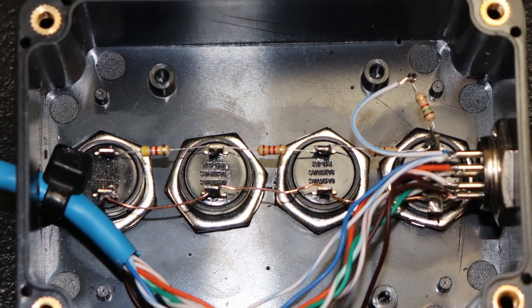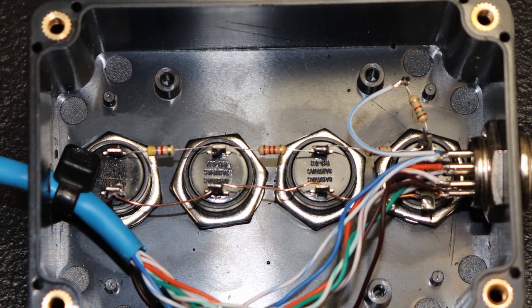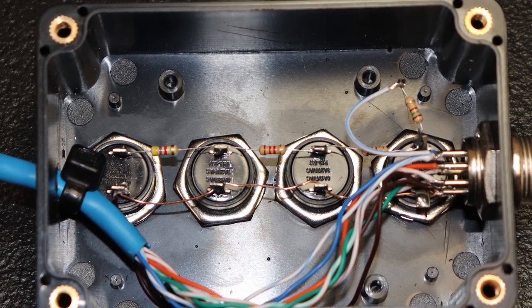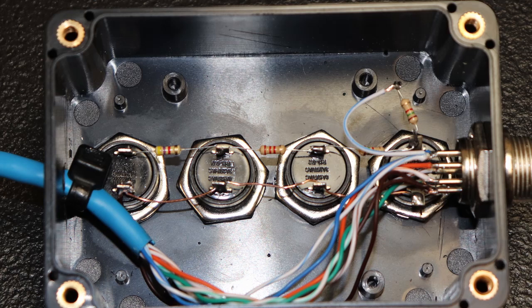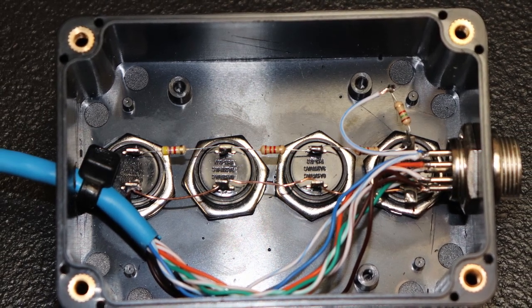Here you can see three of the resistors soldered between the switches and the last, or first, depending on how you look at it, the resistor is soldered to switch one and connected to the lead from pin three.